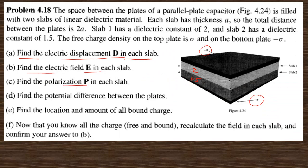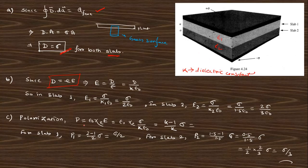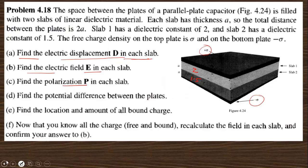The next question asks to find the polarization. Using the relation D = P + epsilon_naught * E, so P = D - epsilon_naught * E. You can also use P = epsilon_naught * chi_e * E. For slab 1, P1 = sigma/2, and for slab 2, P2 = sigma/3. These are the polarizations.